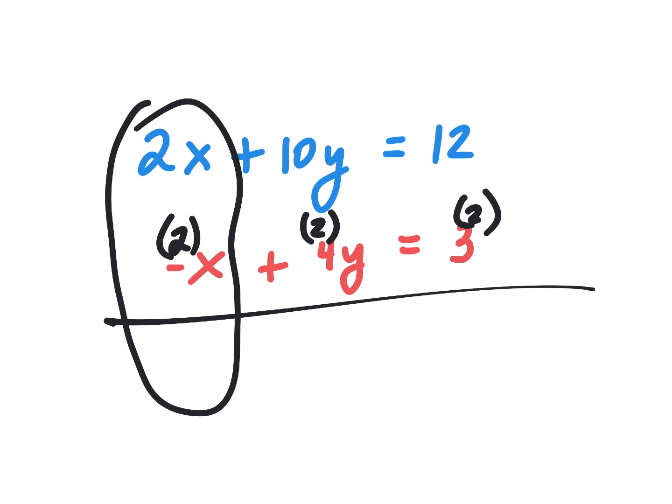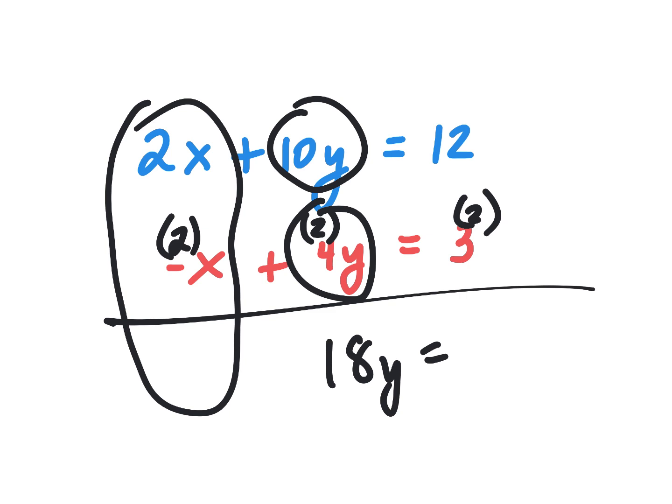I canceled the two things I circled — they're gone. So that's 8y, and then there's this 10y. Combining them together makes 18y equals... Mariam, can you do this next part? 18. What's y equal to then? How many of you had y equals 1? Awesome. Then you back-solve. If it were me, I would do the blue equation because I don't like that negative on the x.